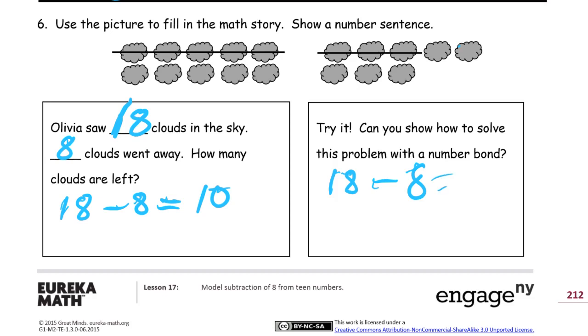We'll show it with a number bond. 18 minus 8. So that's 10 and 8. And if I subtract 8 from the 10 here, there's going to be 2 left there. 2 plus 8 is 10.